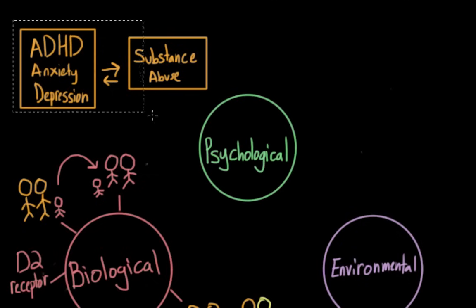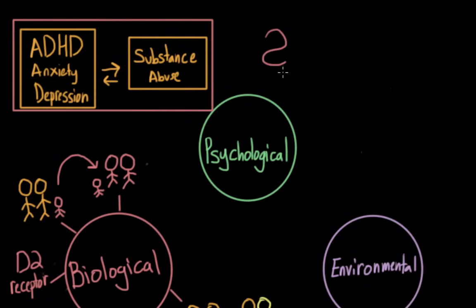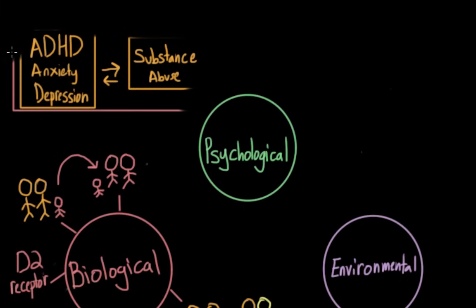Or maybe both mental illness and substance abuse problems could be generated by a third factor. Maybe some genetic vulnerability for both. Either way, it's important to keep in mind when we discuss all of these risk factors that correlation does not imply causation.